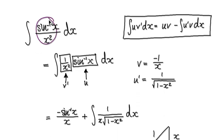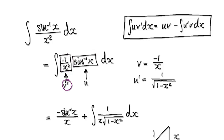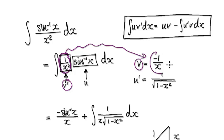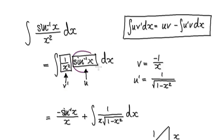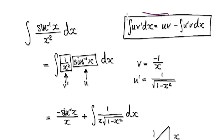Visualize this as being one block multiplying with another block. Let this be v prime. If you integrate it, v will become this. Now if this is u, then if you differentiate it, it will give you this thing here. So now blindly follow this formula.